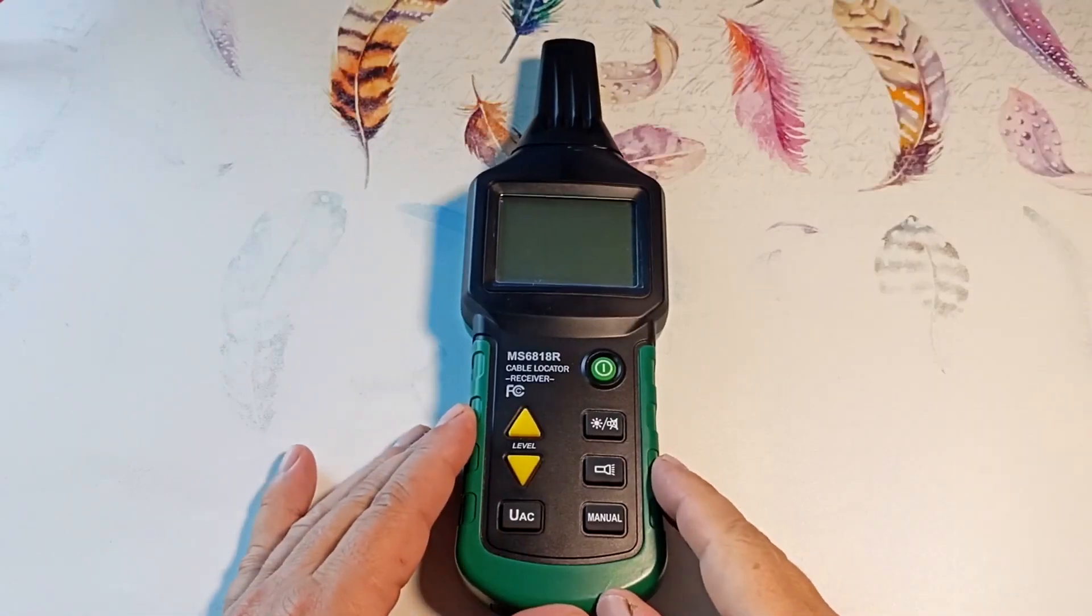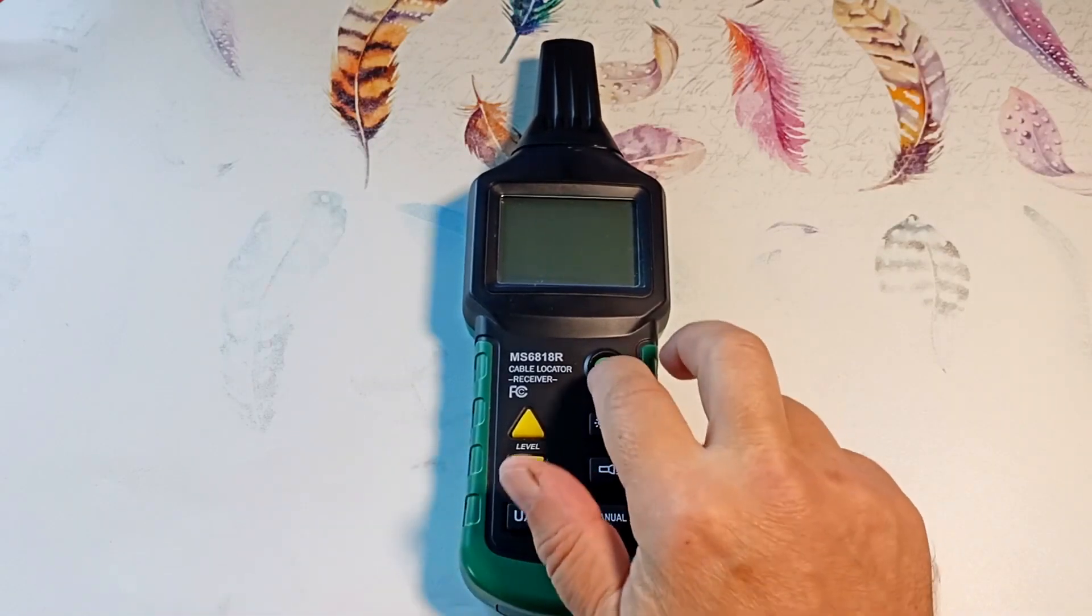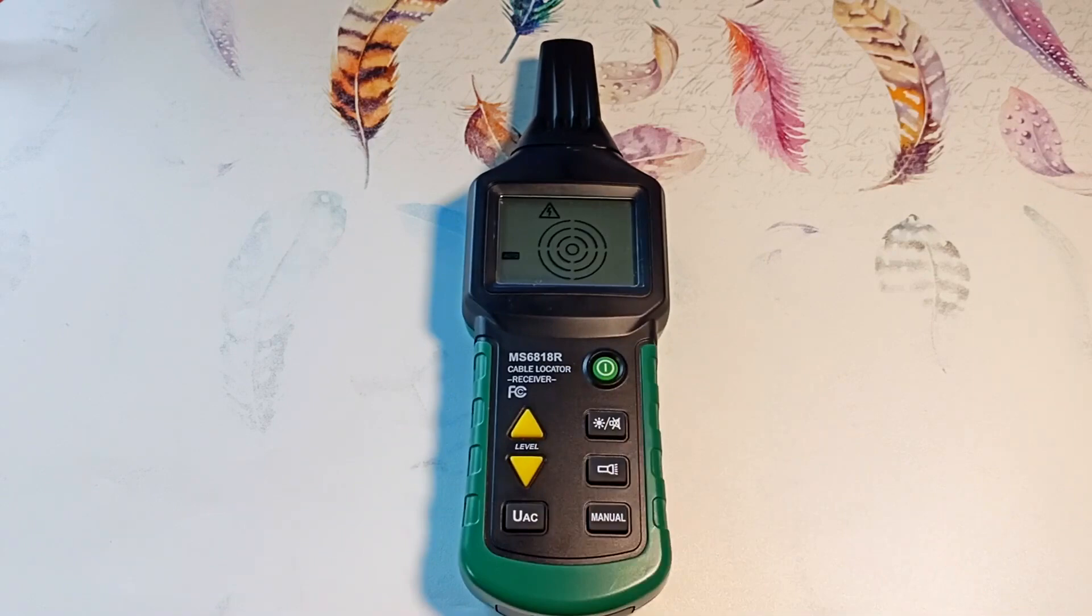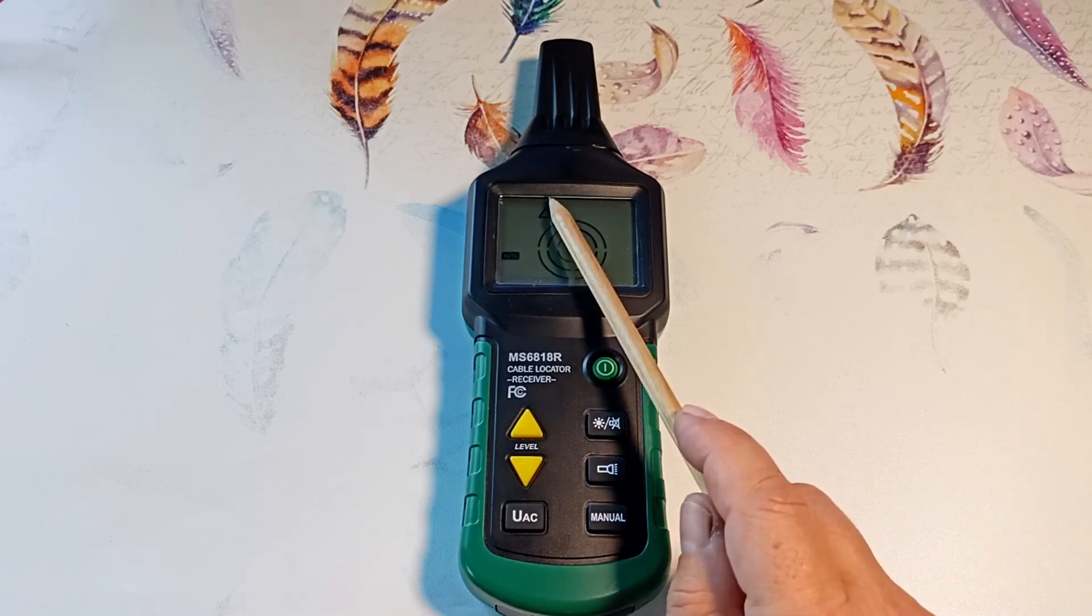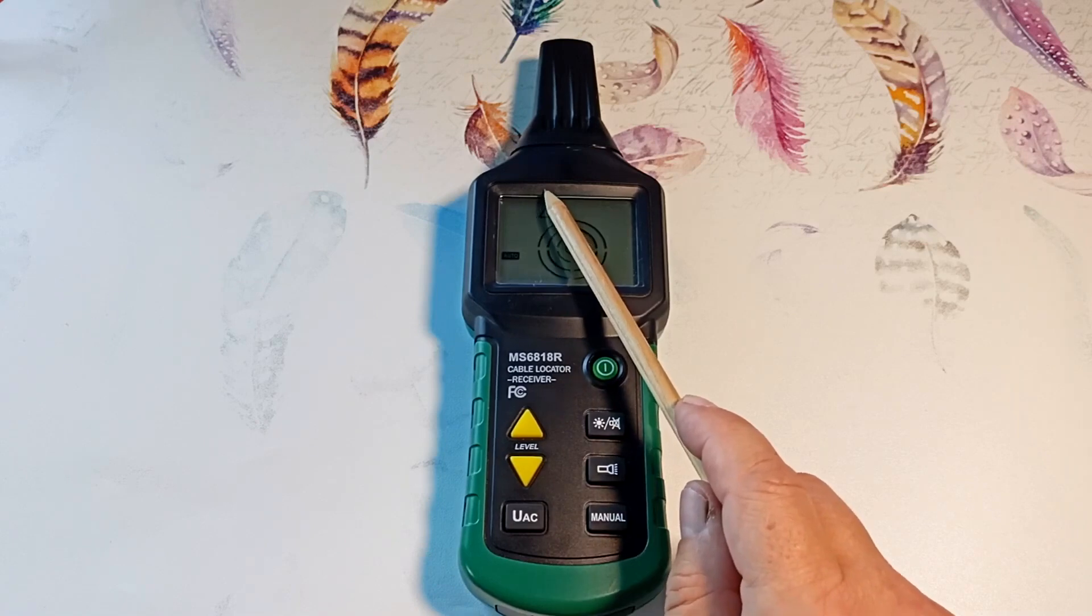And this is the receiver itself. Turn on the device with this button. Initially, the device turns on in automatic mode, where it selects the gain itself. If the device detects an alternating current background, it indicates this with a triangular sign.